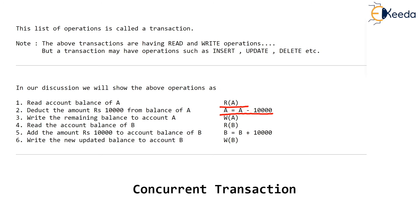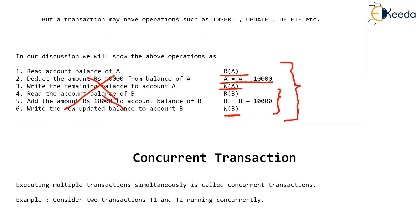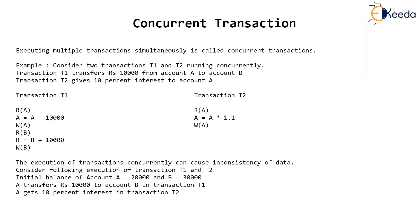Then we are writing back the new, decreased balance of A. Similarly, we are reading the balance of B, adding 10,000 to it, and writing back B. So this will be the usual notation used by us while we describe the transaction — concise and readable. In the next video, I'll be discussing how many types of transactions there are, and what we mean by concurrent transactions and how important it is in our discussion. Thank you very much.